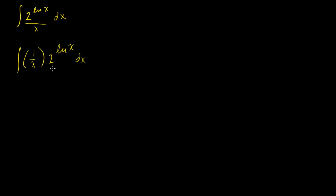You have an expression here — it's kind of part of our larger function — and you have its derivative. We know that the derivative with respect to x of the natural log of x is equal to 1 over x. So we have some expression and we have its derivative, which tells us that we can use u-substitution.